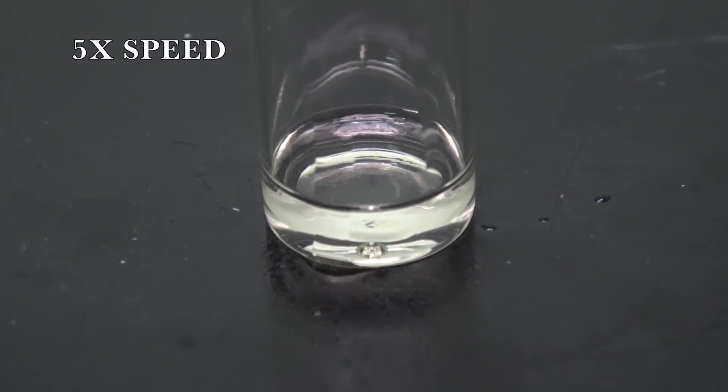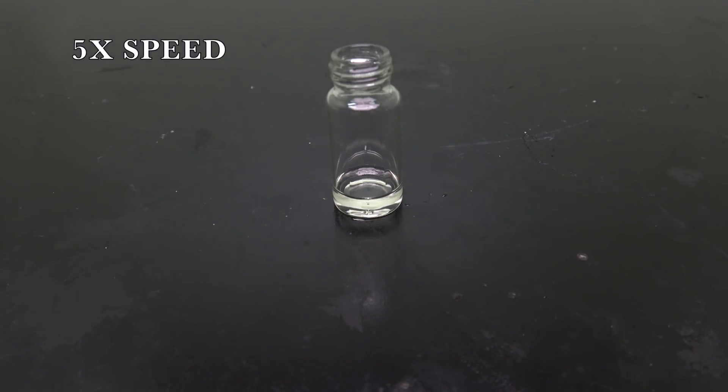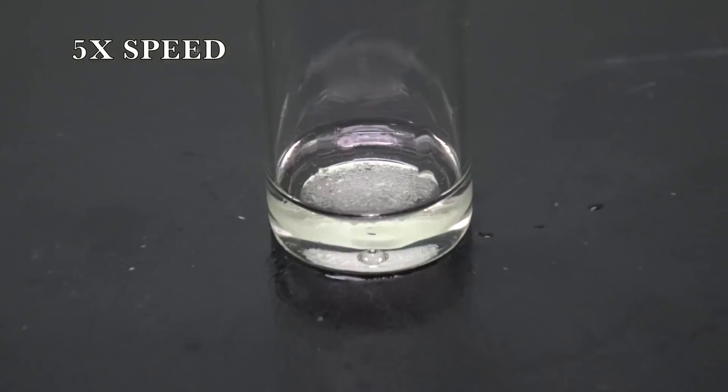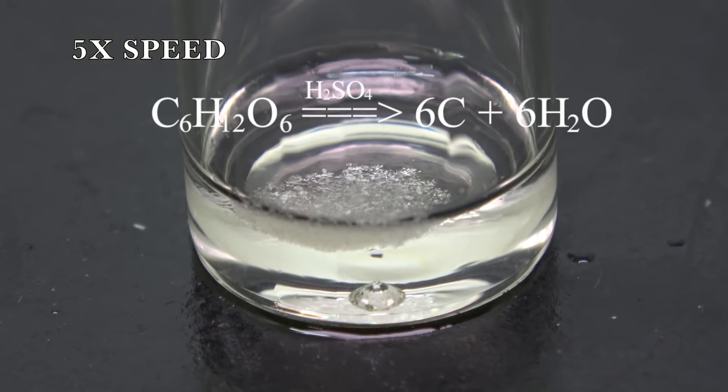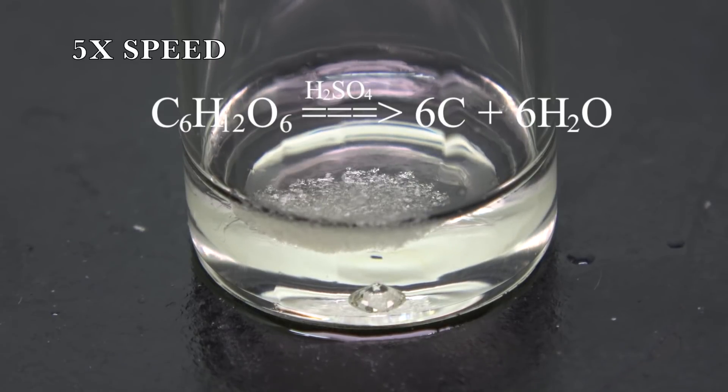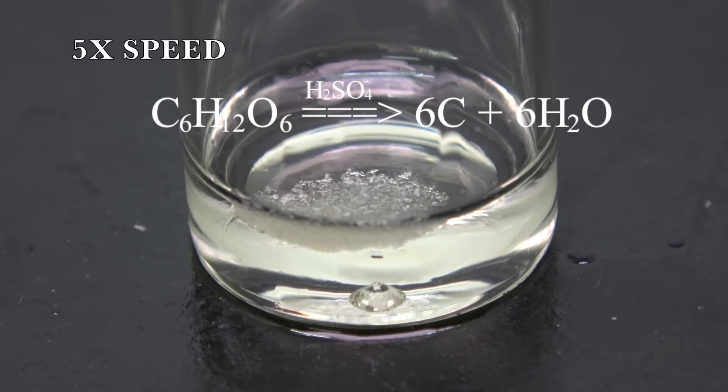Again, for the sake of comparison, I throw in some glucose. Sulfuric acid is a strong dehydrating agent. The hydroxyl groups are ripped off from the glucose molecule and form elemental carbon and water.